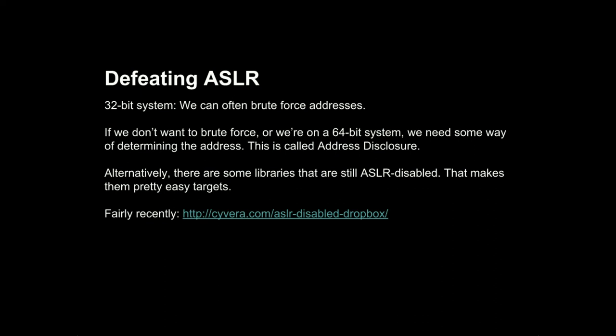If we don't want to brute force, or if we're on a 64-bit system, we need some way of determining the address that libraries have been loaded to. That's done via an address disclosure vulnerability — you need an additional vulnerability to figure out the offset. For example, if you know that 0x800 bytes from the beginning of the library there's a particular gadget, it's always going to be that distance from the start. If you can figure out where the start is, you can figure out where that gadget is. Finding an address disclosure vulnerability enables you to do a little extra math and compute all your gadget addresses — and then you're back to being able to use all of them.